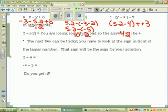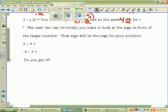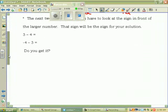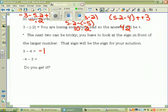Are you ready? I need you to quiet down please. In other words, 3 minus a negative 2. You are losing something bad so it goes to a plus. Remember that? The next two can be tricky. You have to look at the sign in front of the larger number. That sign will be the sign for your solution. So go ahead and try those two and see what you get. Alright, Miles, what did you get for the first one? Negative 1. Very good. The sign in front of the larger number: 4 is the larger number, the sign in front of it is negative. Negative 4 minus 3. Ron, give me it. Negative 7. Beautiful. How did we do?